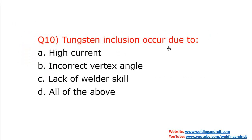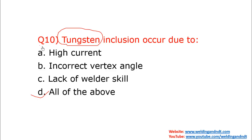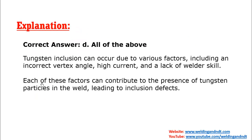Question number ten: tungsten inclusion occurs due to — options are high current, incorrect vertex angle, and lack of welder skill. When the tungsten electrode melts and goes inside the welding, that is a tungsten inclusion. The answer is all of the above. Due to all the above reasons, tungsten inclusion can occur.